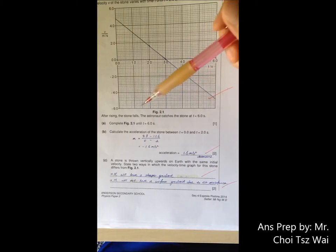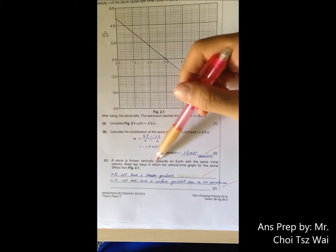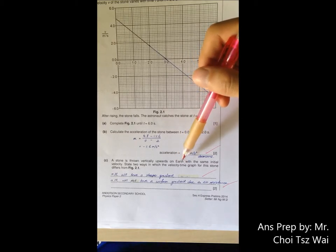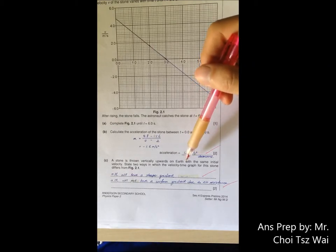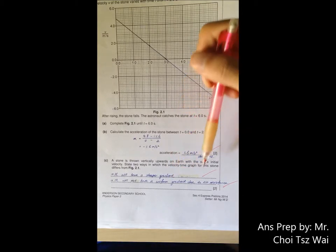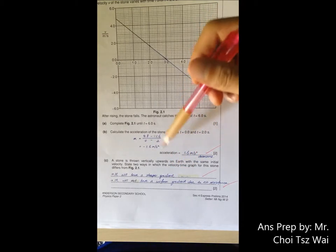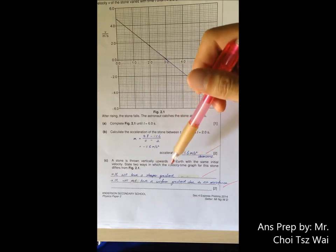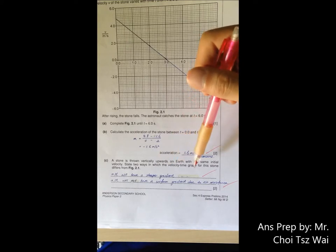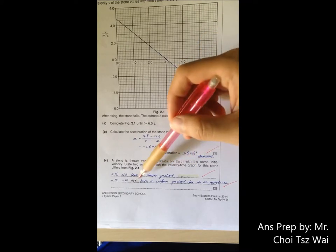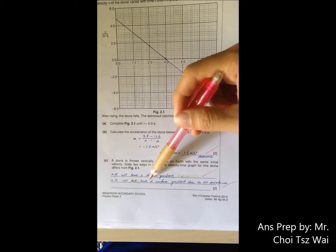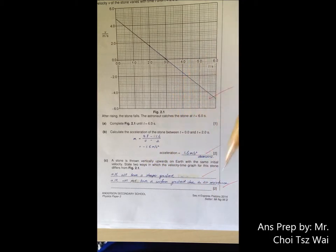Then after that, it is asking you what will happen if the stone is thrown vertically upward on Earth. On Earth, it has a larger gravitational acceleration and therefore your gradient will be steeper. And on Earth, there is an atmosphere, meaning that there will be air resistance. And with air resistance, then you won't be able to get a constant or a uniform acceleration. Not only you have to say that you won't get a constant acceleration, you have to relate it back to the graph. You have to say that the gradient will not be uniform due to air resistance.